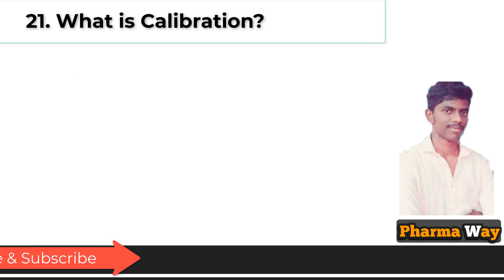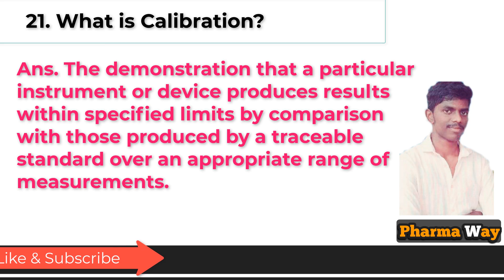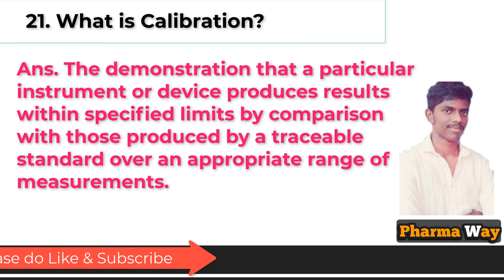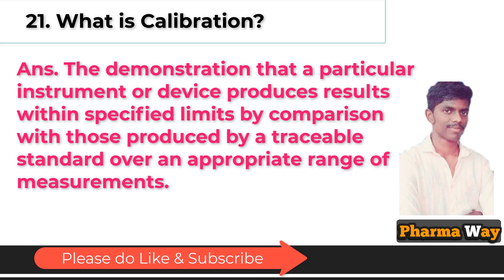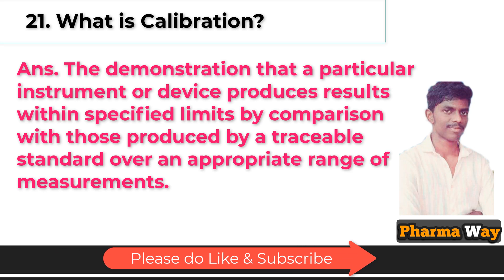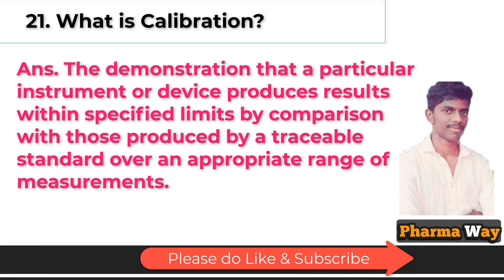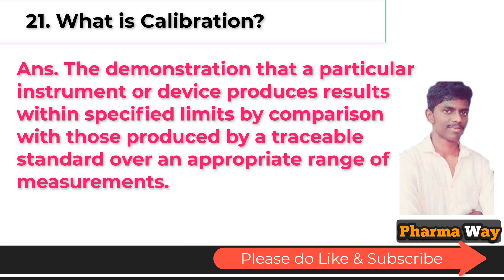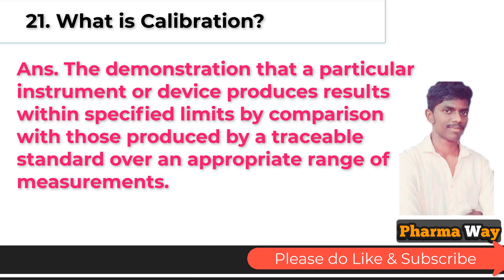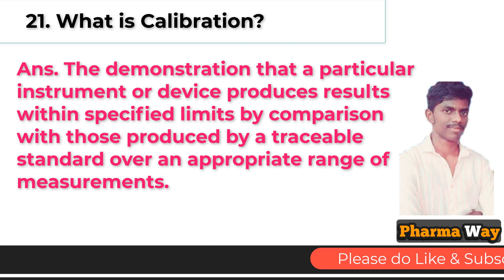What is calibration? Answer: It is the demonstration that a particular instrument or device produces results within specified limits by comparison with those produced by a traceable standard over an appropriate range of measurements.